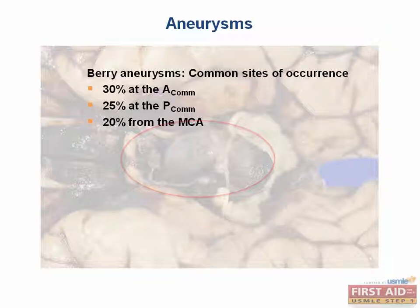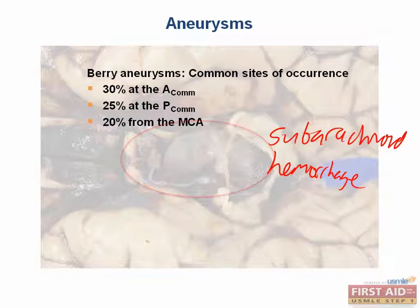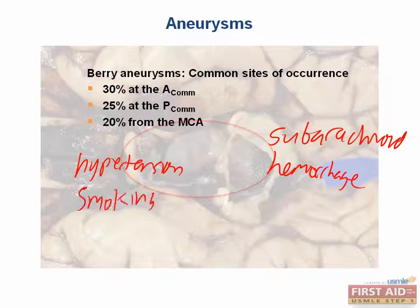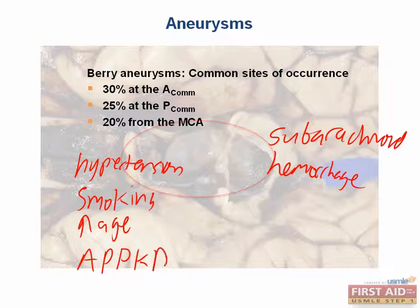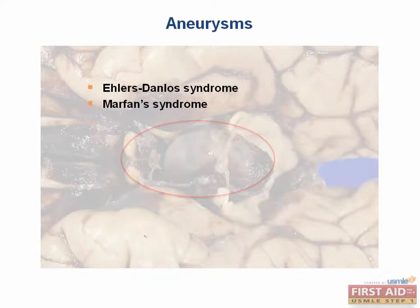Berry aneurysms are prone to rupture, which can lead to subarachnoid hemorrhage. Risk factors for aneurysmal rupture include hypertension, smoking, advanced age, and people with adult polycystic kidney disease, ADPKD. There are also two connective tissue disorders that lead to increased risk of developing aneurysms: Ehlers-Danlos syndrome and Marfan syndrome. Both affect connective tissue, which is obviously an important part of the integrity of blood vessels.